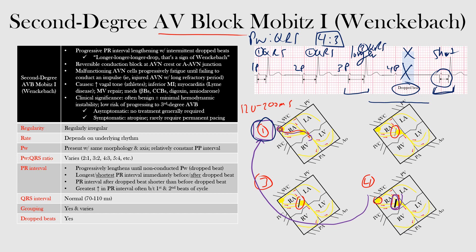Second-degree heart block Mobitz type 1 is a reversible conduction block believed to result from a diseased or injured AV node with a long refractory period. The malfunctioning AV nodal cells progressively fatigue, which is reflected in the progressively prolonged PR interval until finally failing to conduct an impulse — the dropped beat. Some causes include an increase in vagal tone such as in athletes, inferior infarctions, myocarditis especially Lyme disease, and mitral valve repair.